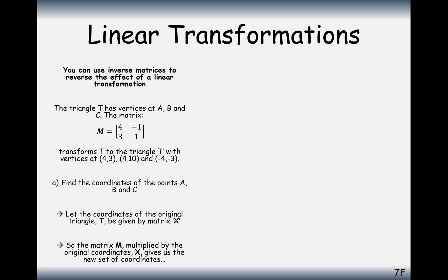What we're going to do is use capital X to represent a matrix of coordinates. So it might look something like X equals [A1, A2, B1, B2, C1, C2], where A1, A2 represents coordinate A; B1, B2 represents coordinate B; and C1, C2 represents coordinate C. We want to find out where these coordinates have ended up after the transformation. We'll use X instead of all that algebra, and we want to work out what X is.